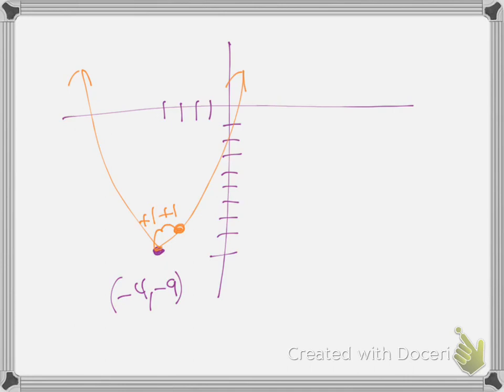There it is. Does it make sense? So it's a different way to get the center - you've got to use that x equals negative b over 2a formula. Then plug that in and you get y. Once you get the center dot, you just do the same thing: rise over run. There's the U shape.